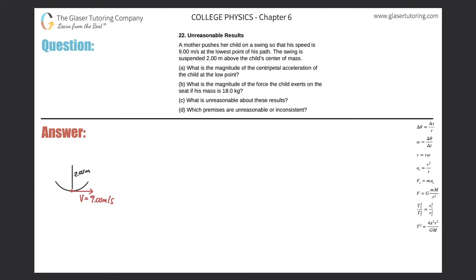Number 22. A mother pushes her child on a swing so that his speed is nine meters per second at the lowest point of his path. The swing is suspended two meters above the child's center of mass. Letter A: What is the magnitude of the centripetal acceleration of the child at the low point?